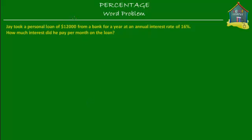Welcome to homecampus.com.sg. Let's solve a word problem related to banking. Jay took a personal loan of $12,000 from a bank for a year at an annual interest rate of 16%. How much interest did he pay per month on the loan?